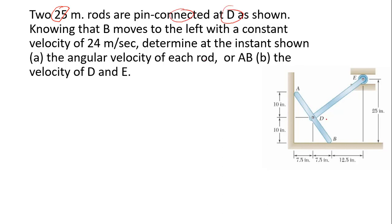We discuss this problem: two 25-meter rods are pin-connected at D as shown. Point B moves to the left with a constant velocity V equal to 24 m/s. We need to calculate the angular velocities.